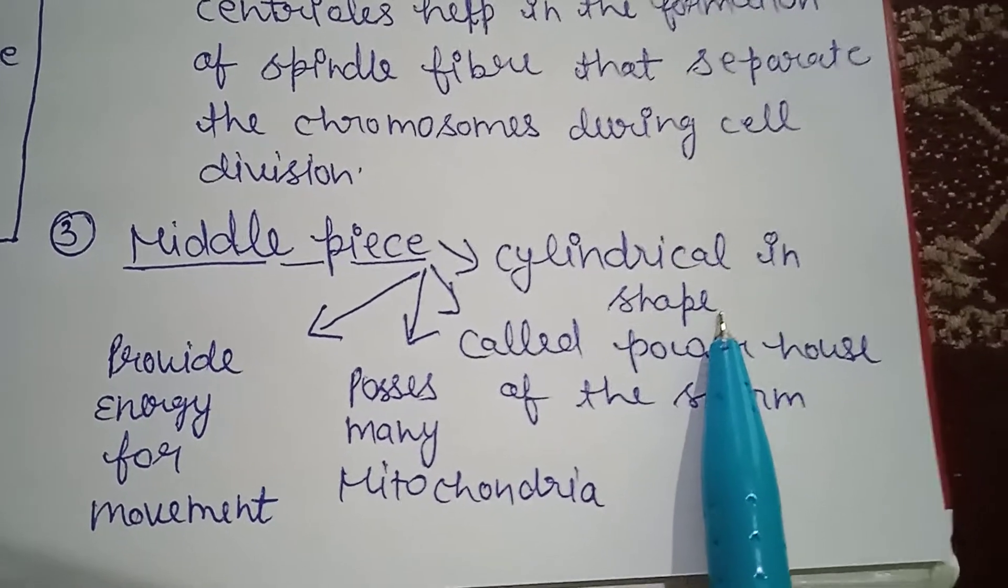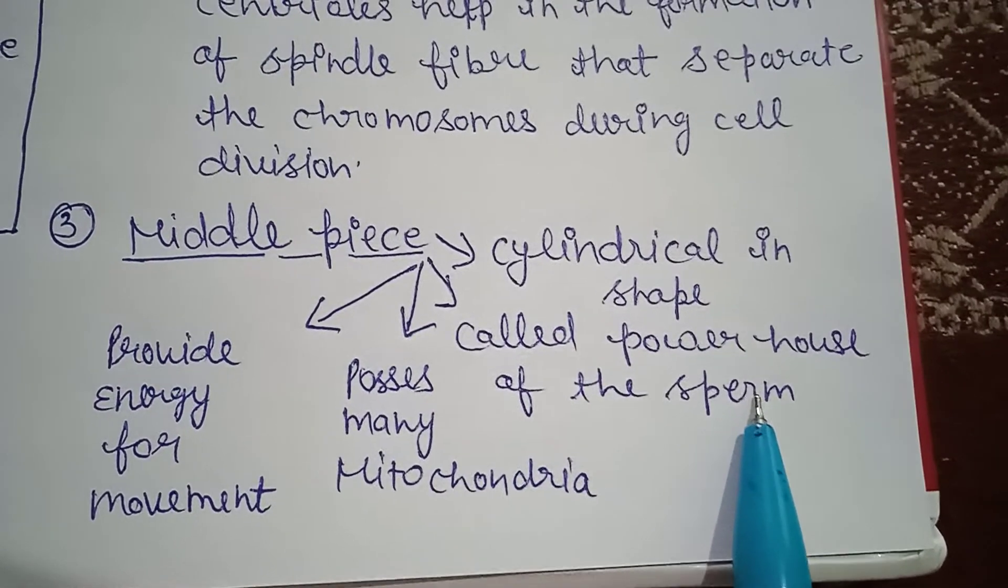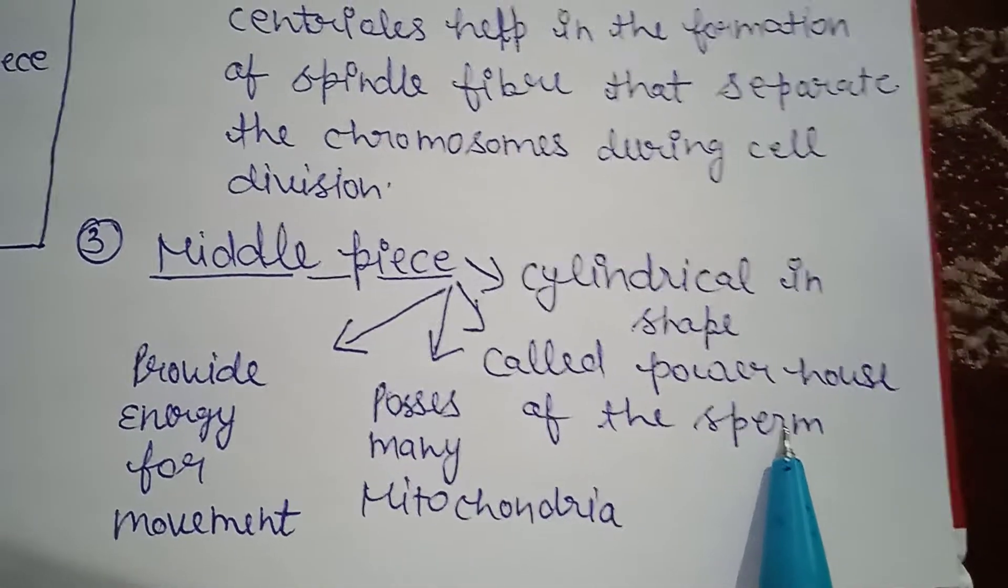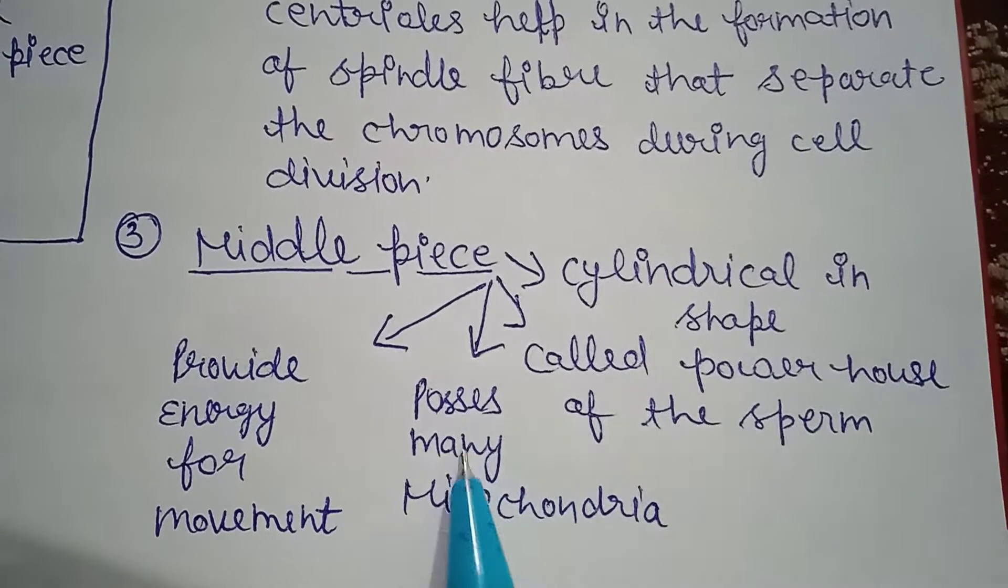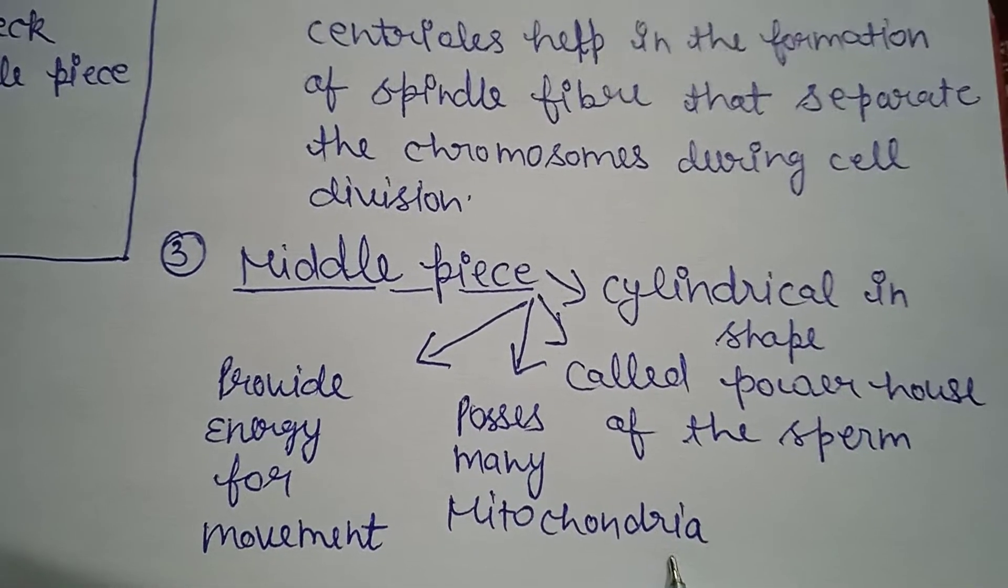This is called the powerhouse of the sperm. Middle piece is also known as the powerhouse of the sperm, why? Because it possesses many mitochondria. Now we talk about what is the function of mitochondria in the sperm. Mitochondria provide energy for the movement of sperm.